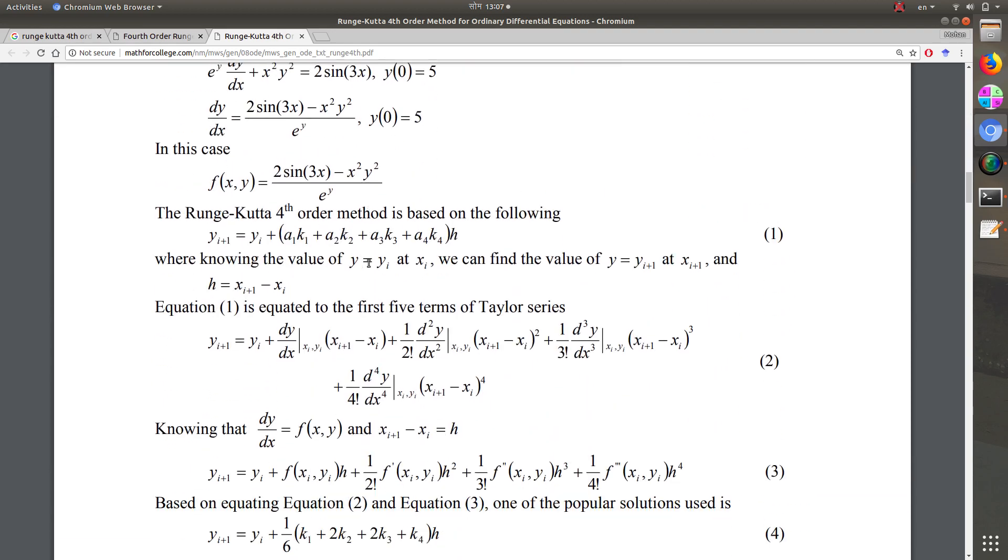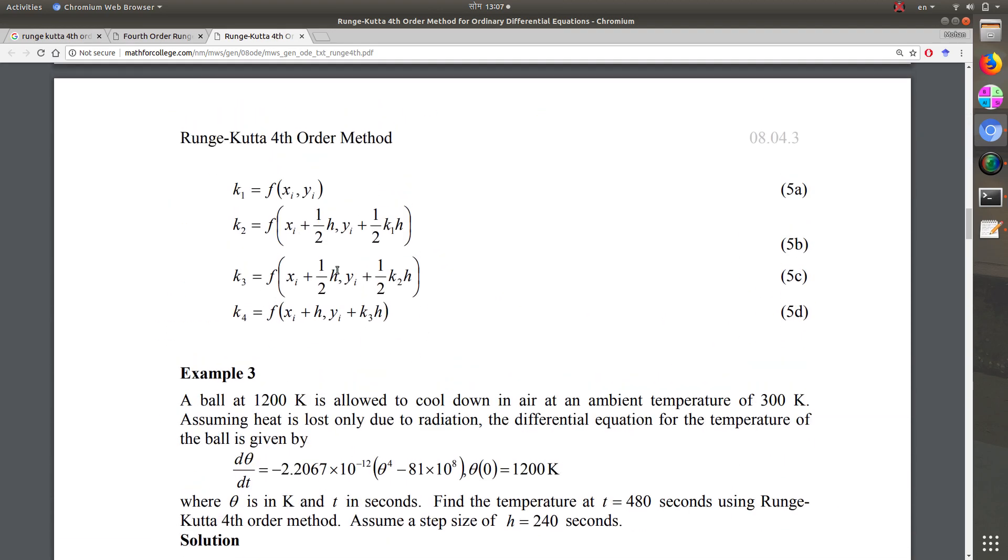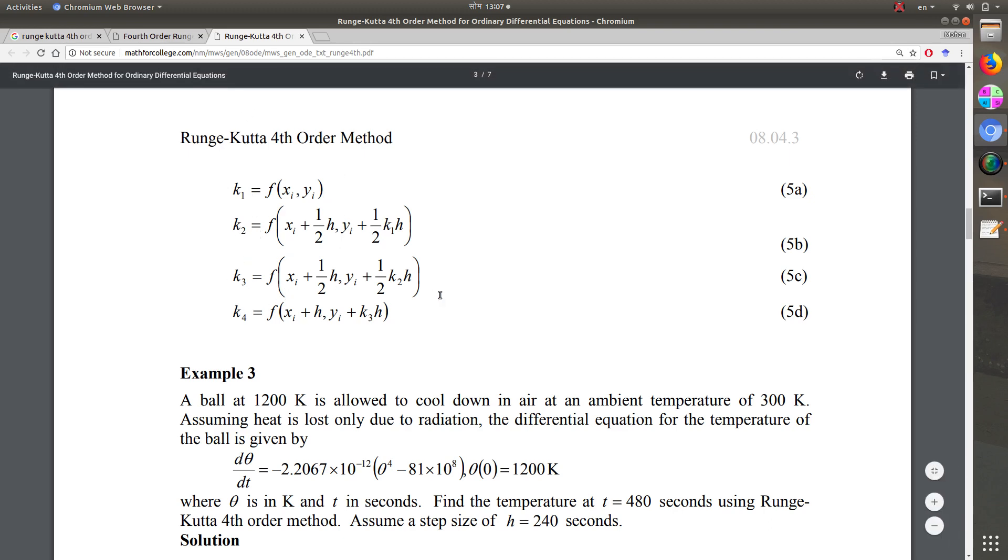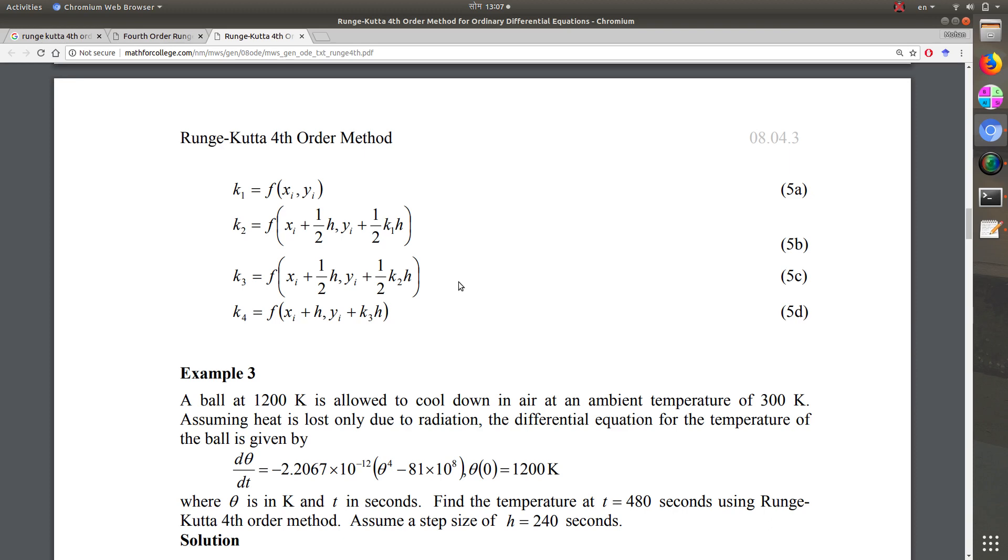This is the fourth order formula in which we will calculate k1, k2, k3, and k4 using this formula. Finally we will compute dy as 1/6 of k1 plus k4 plus 2 times k2 plus 2 times k3.